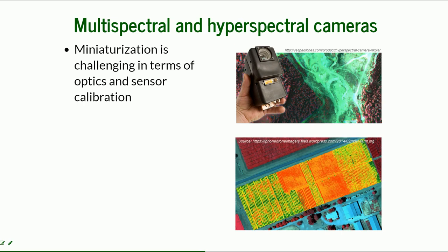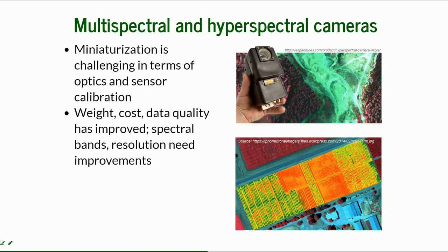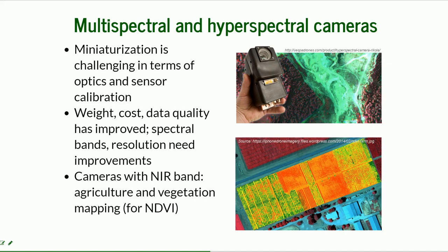When it comes to information beyond the RGB bands, we move into multispectral and hyperspectral cameras. This is still a challenge because more sophisticated thermal technology is involved, and miniaturization is challenging in terms of optics and sensor calibration. There are trade-offs around weight, cost, and data quality. Cameras with a near-infrared red band are cheaper, lighter, and widely used for agriculture and vegetation mapping — for example, NDVI calculations. This is also considered a multispectral camera, but with just one additional band.